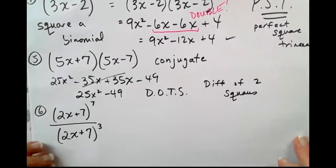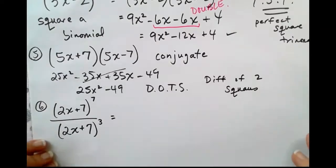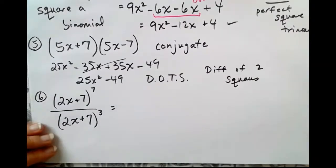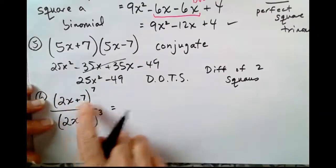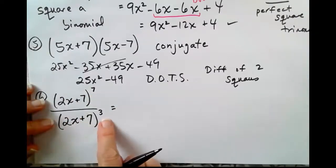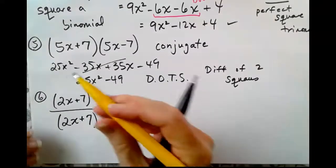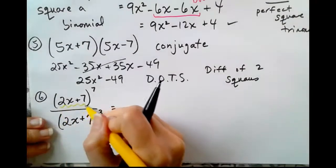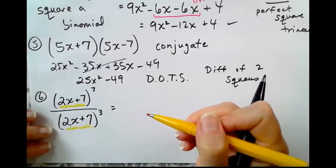Last problem for this video is a very short lesson because it should be very simple and easy for you all to remember how to do these. We have 2x plus 7 quantity raised to the 7th power, and 2x plus 7, the quantity raised to the 3rd power. Obviously, it would take a long time to expand 2x plus 7 to the 7th power. What needs to be seen here is that we have the same base on the top and the bottom.